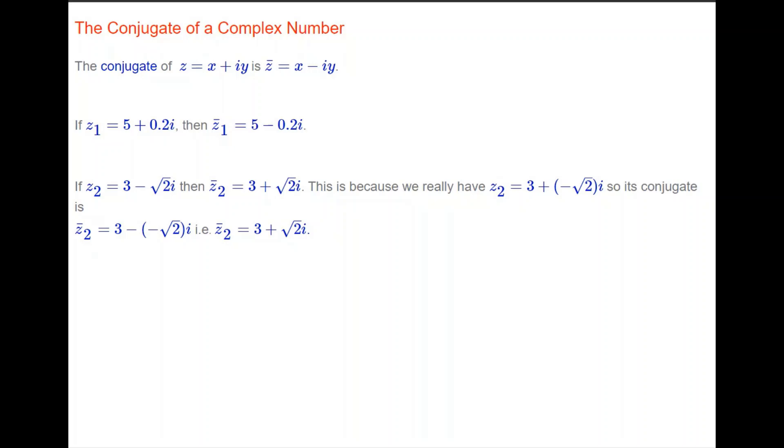This is because we really have z2 as 3 plus minus root 2i, so its conjugate will be 3 minus minus root 2i, which becomes 3 plus root 2i. So, notice that the conjugate of the conjugate of z is the original complex number z.